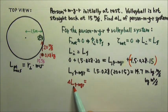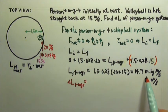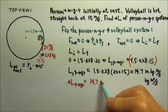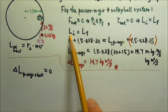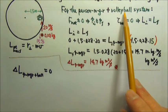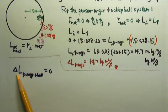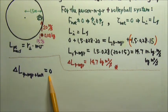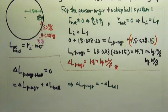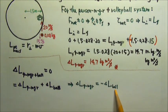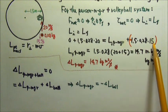So the change in angular momentum of the person's merry-go-round system is the final angular momentum minus the initial angular momentum. The answer is 14.7 minus 0, which equals 14.7 kilogram meters squared per second. Another way to look at this problem: since the total angular momentum of the person's merry-go-round plus volleyball system is conserved, the delta L of everything is zero. So the change in angular momentum of the person's merry-go-round system plus the change in angular momentum of the ball must equal zero — meaning they are equal in magnitude and opposite in direction.